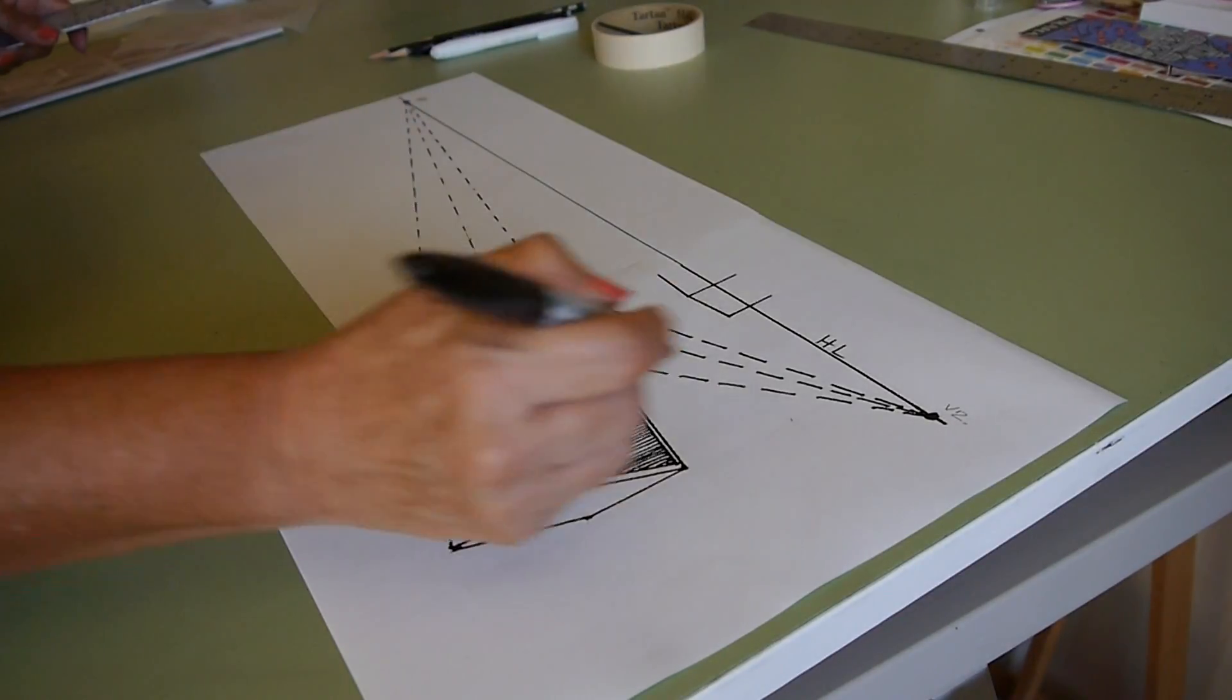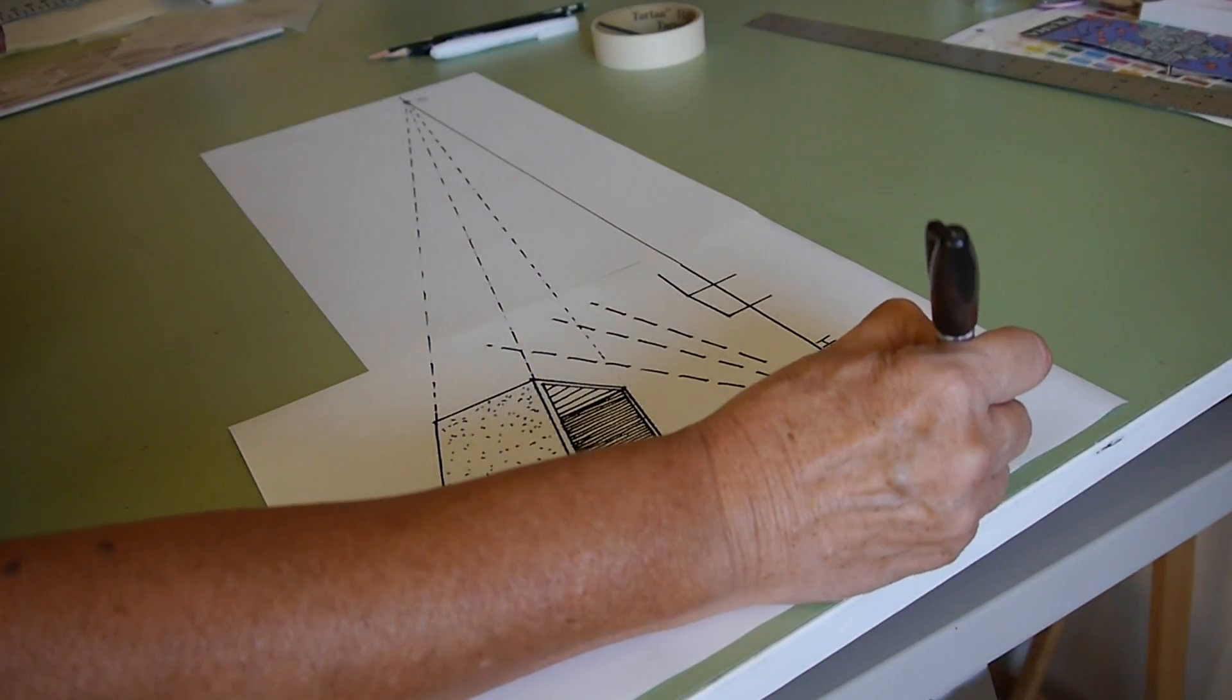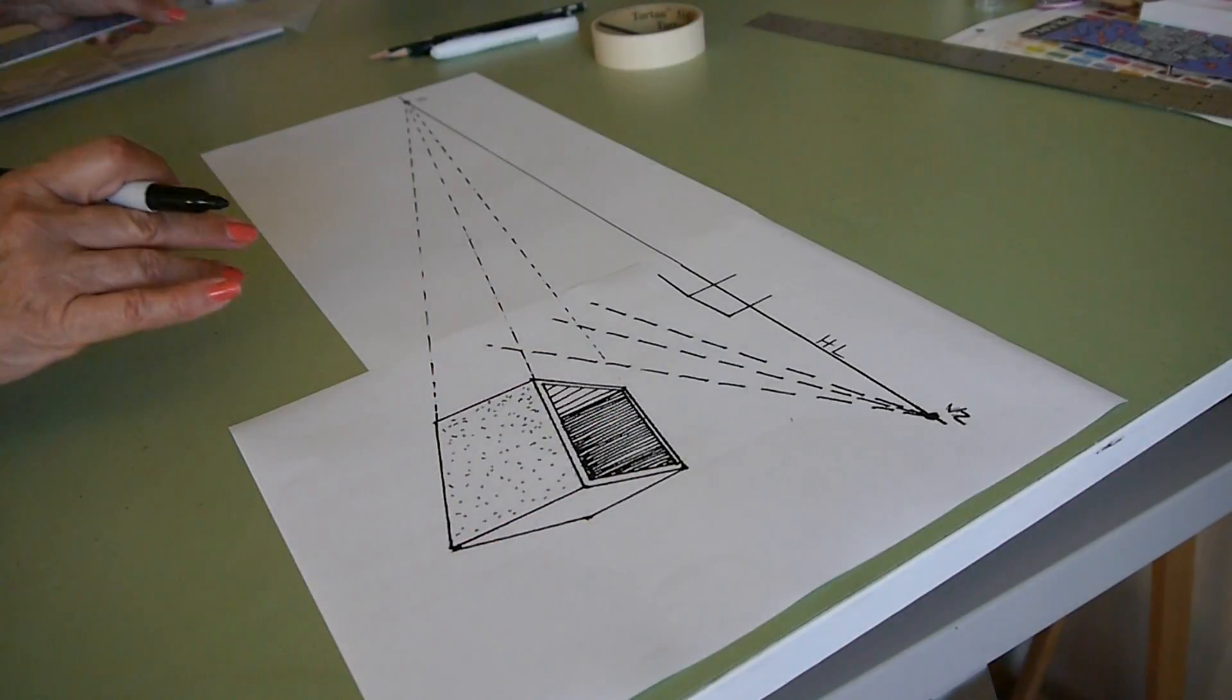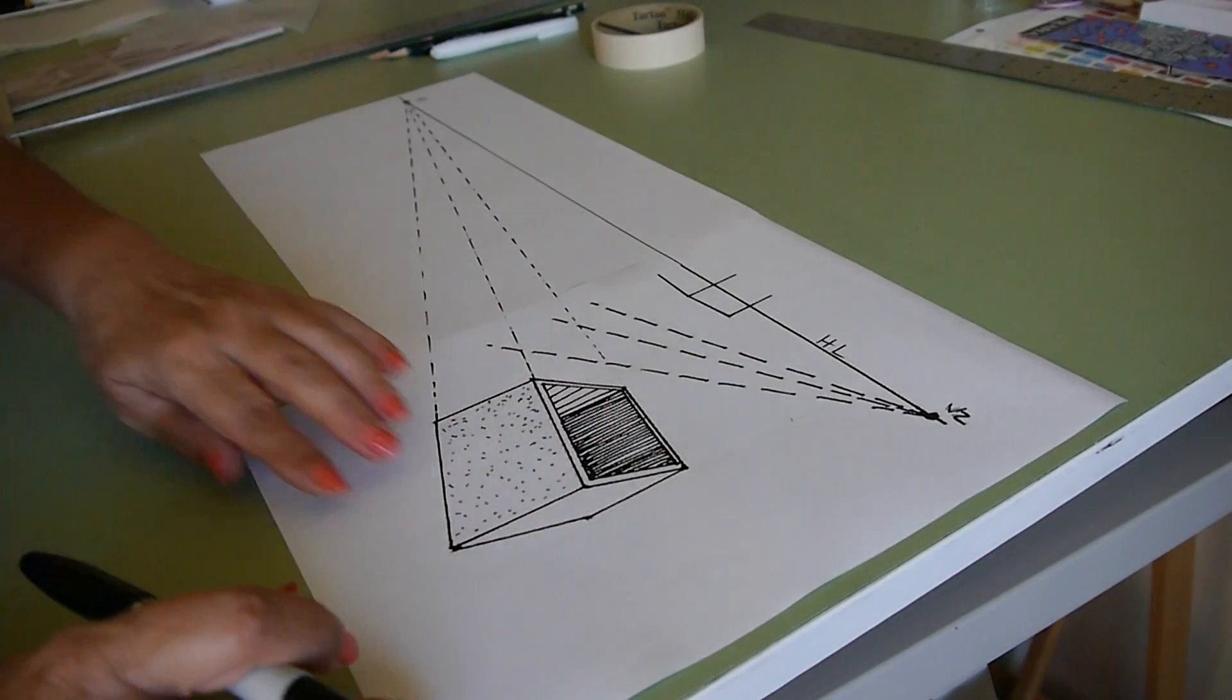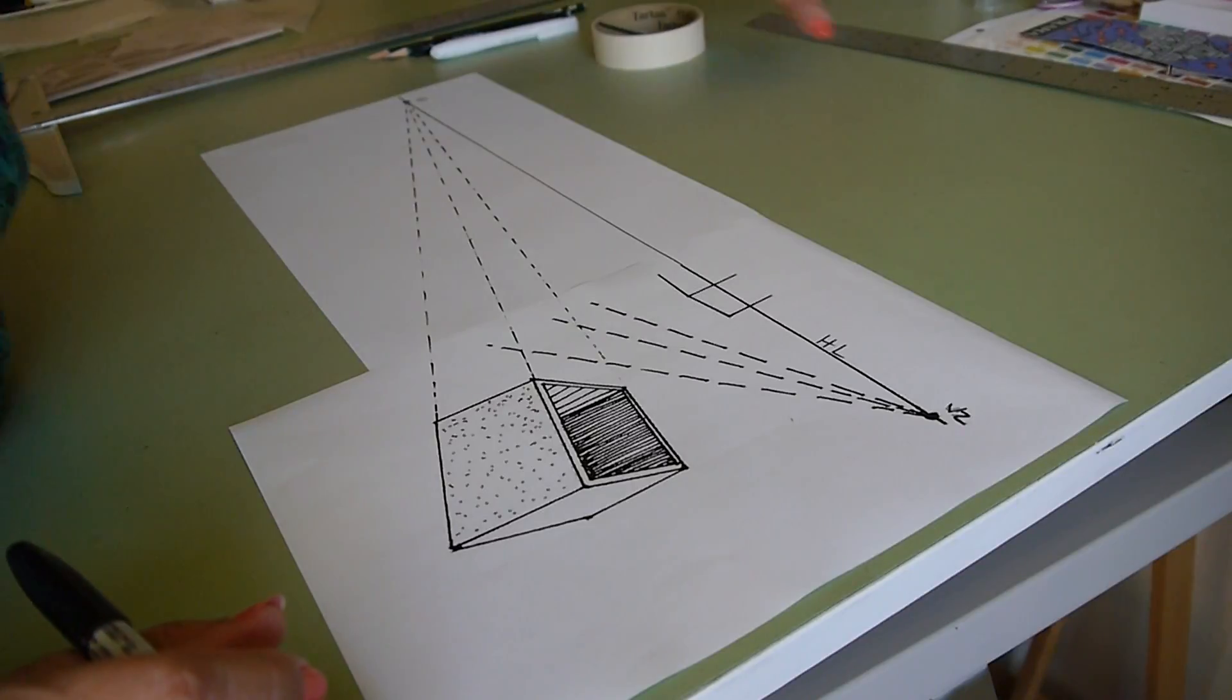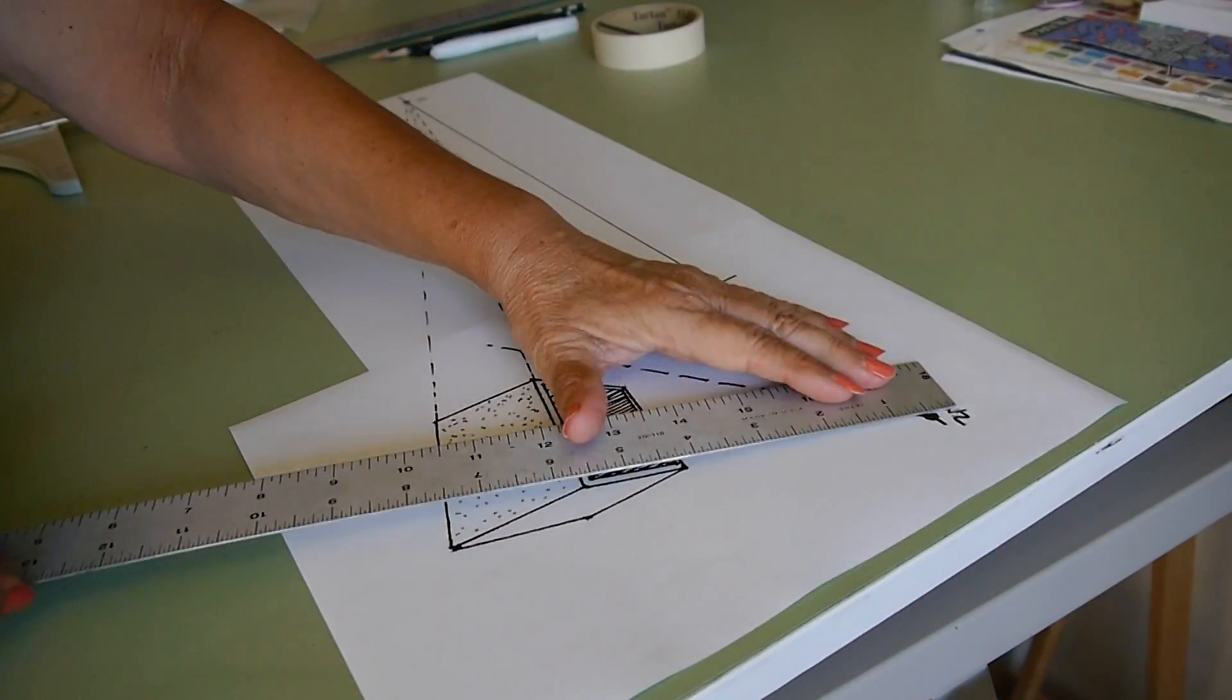This I will call vanishing point one, this one is vanishing point two, and remember this is the horizon line and this is my box. Now remember how can I go back into the other vanishing point two just to make sure.